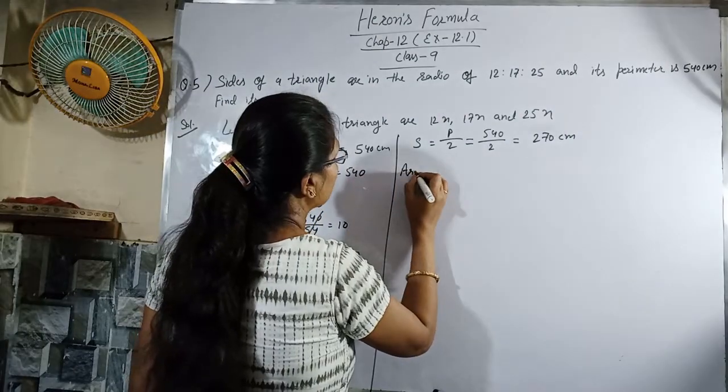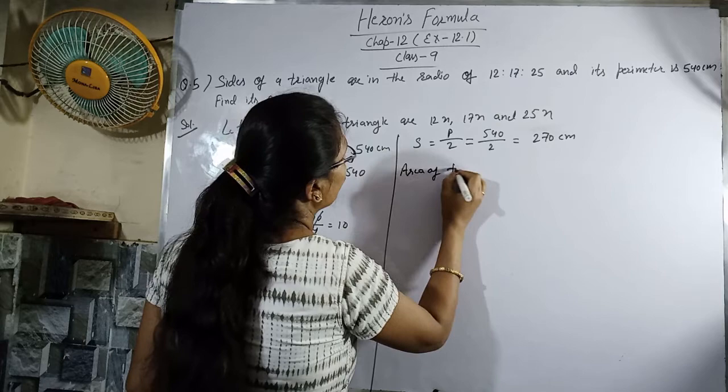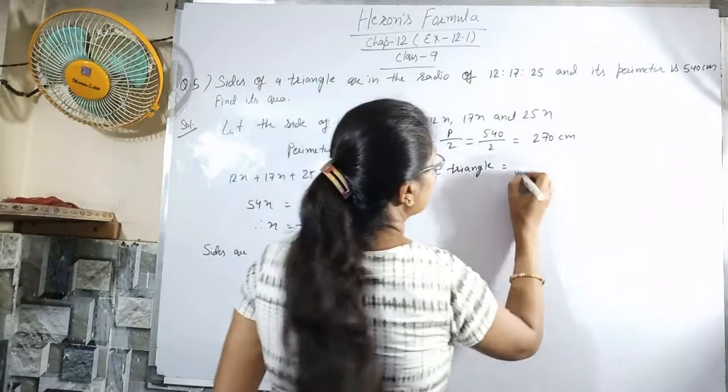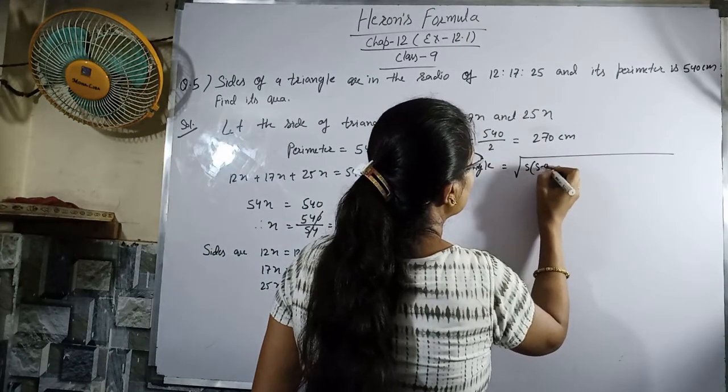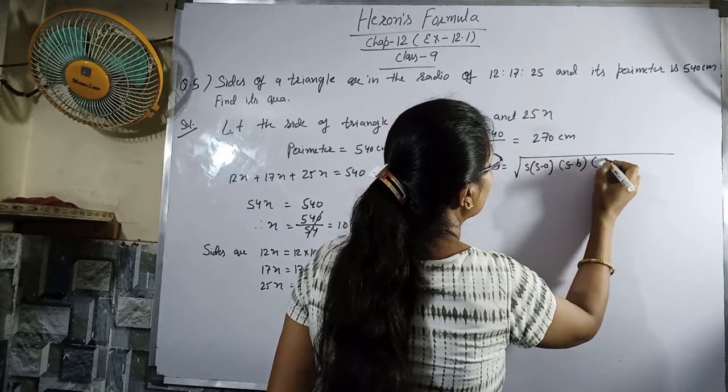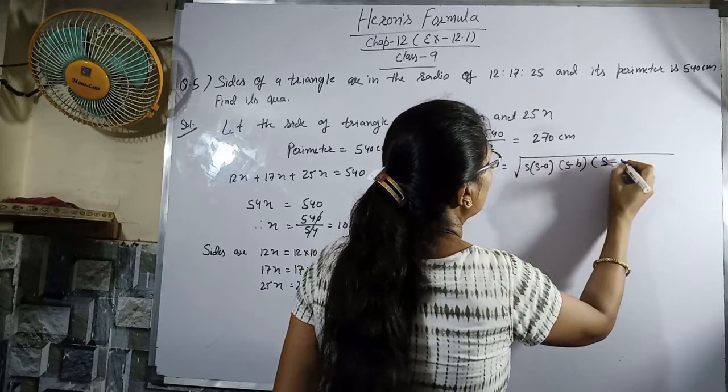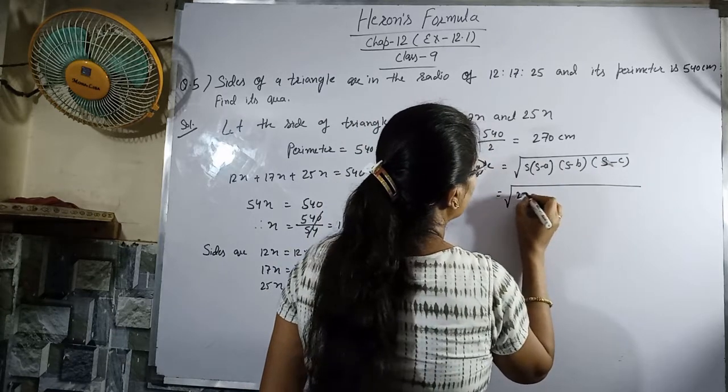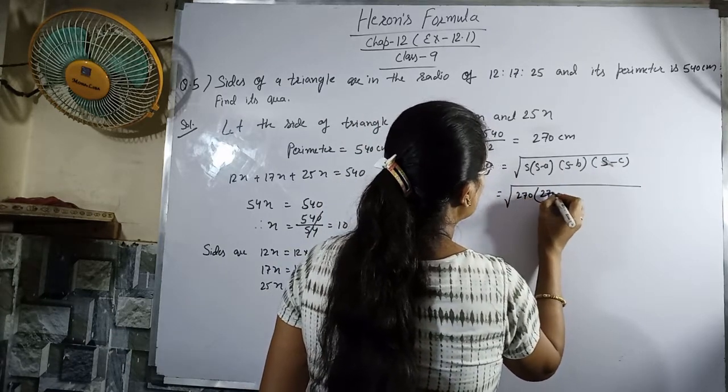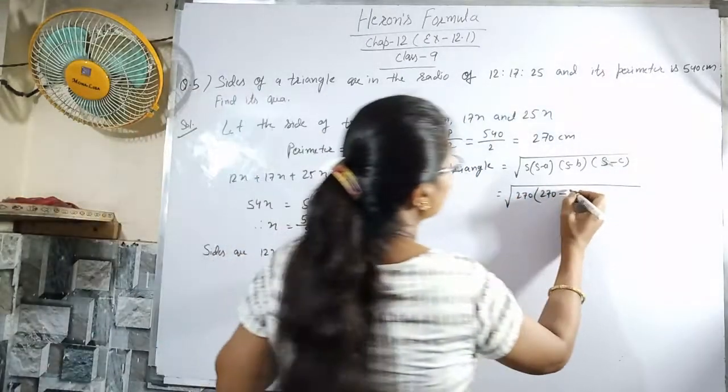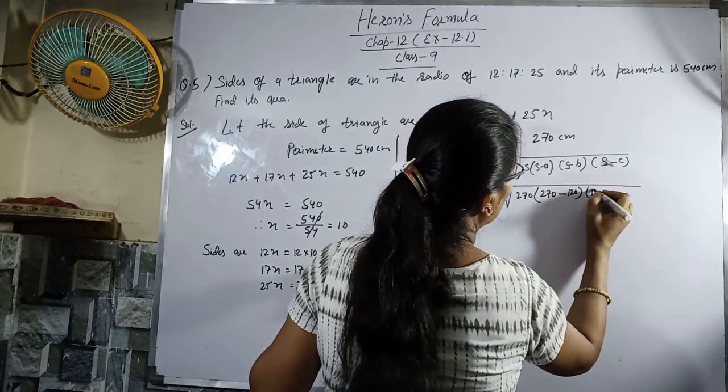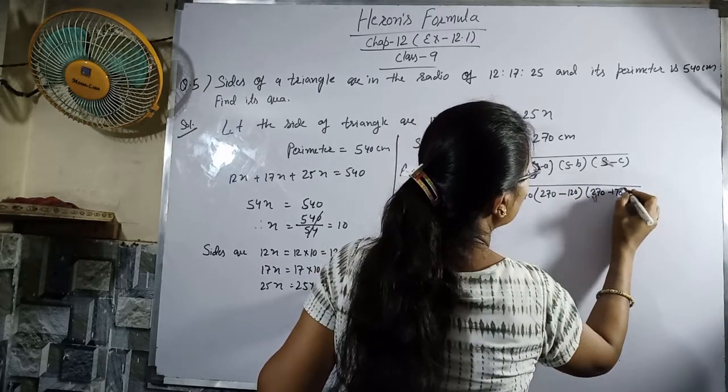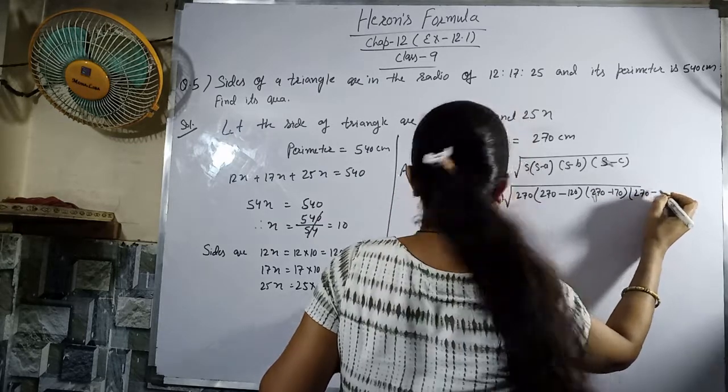Now area of triangle is square root of s times (s minus a) times (s minus b) times (s minus c). We found s equals 270. So it's square root of 270 times (270 minus 120) times (270 minus 170) times (270 minus 250).